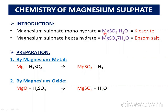Magnesium belongs to Group 2A, so its valency is +2. The sulfate ion SO4 has a valency of -2. Since magnesium's valency is +2 and sulfate's is -2, they are equal and neutral, so you don't need to cross them. The simple formula is magnesium sulfate — you need one magnesium ion and one sulfate ion.